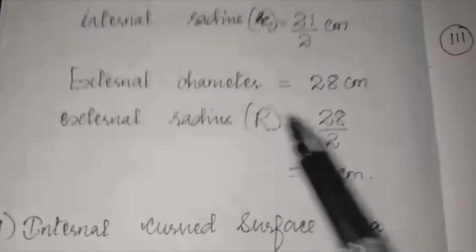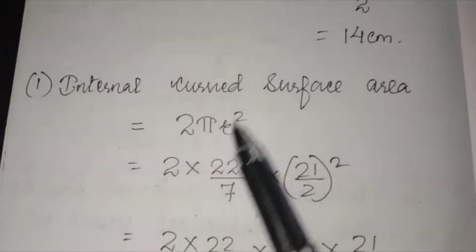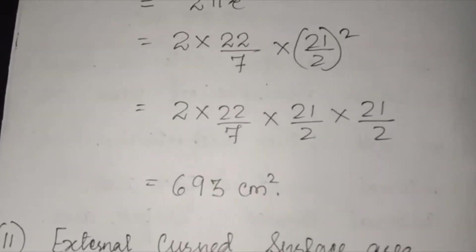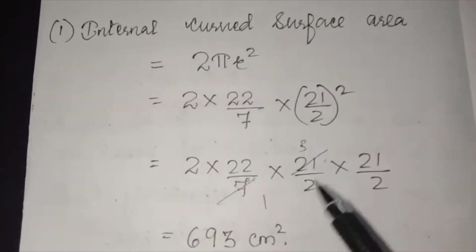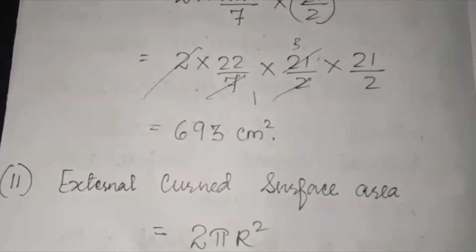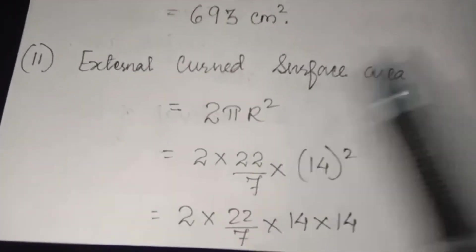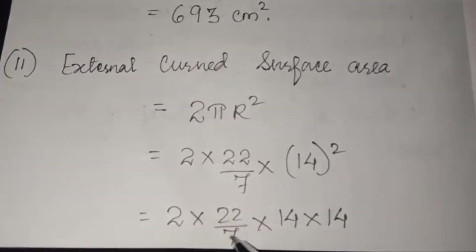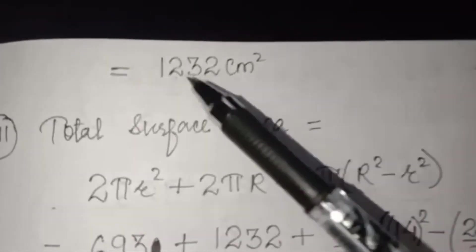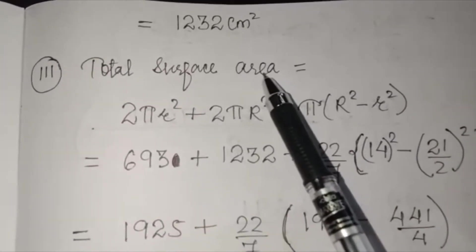Internal diameter is 21, so small r = 21/2. External diameter is 28, so capital R = 14. Internal curved surface area = 2πr² = 2 × 22/7 × (21/2)² = 693 cm². External curved surface area = 2πR² = 2 × 22/7 × 14² = 1232 cm².